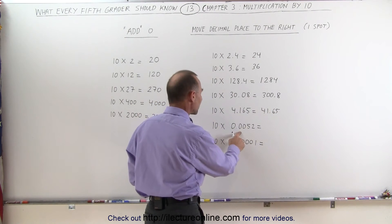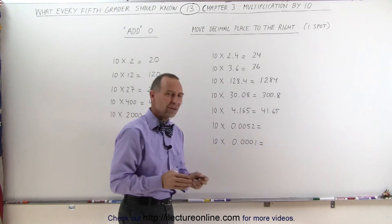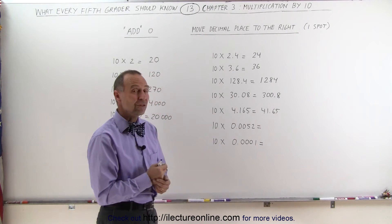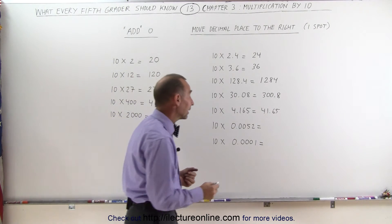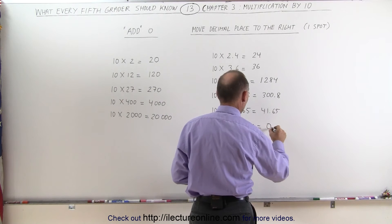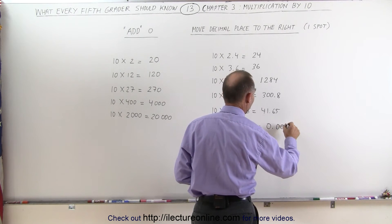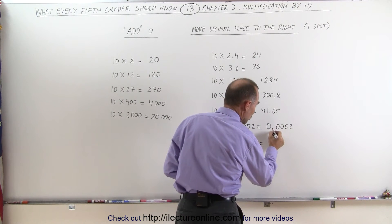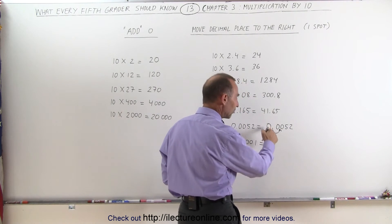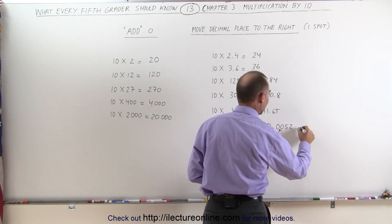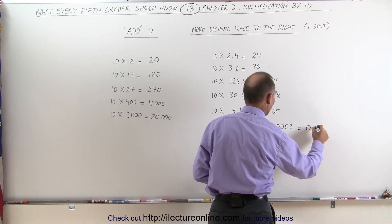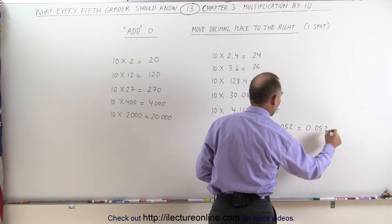On the next number here, when there's so many zeros there, it makes it a little bit more confusing. And sometimes it's easier to do it like this. This is equal to 0.0052, and we physically moved the decimal place over like that. We physically show what it looks like, and so you can see that it's equal to 0.052.